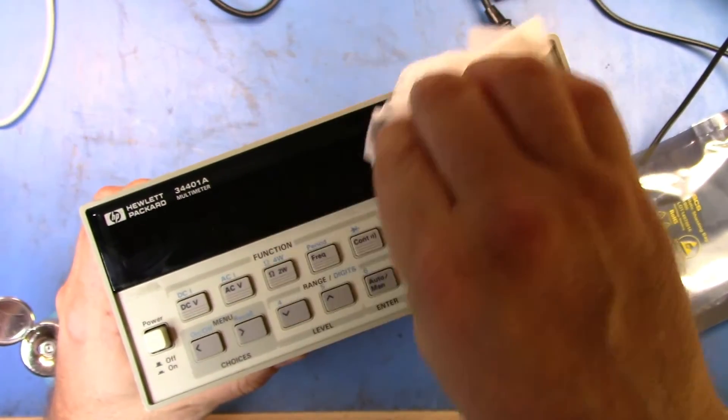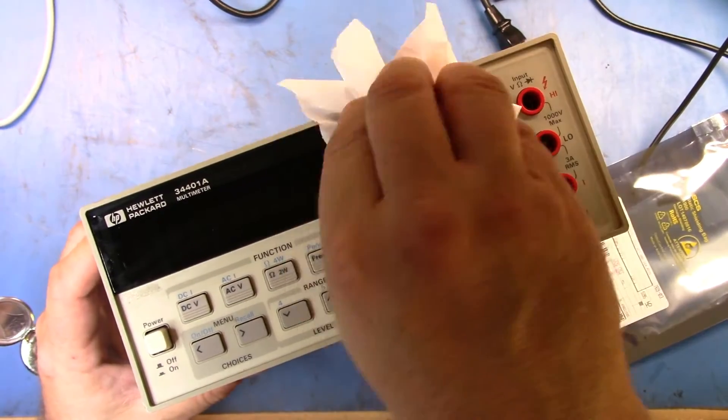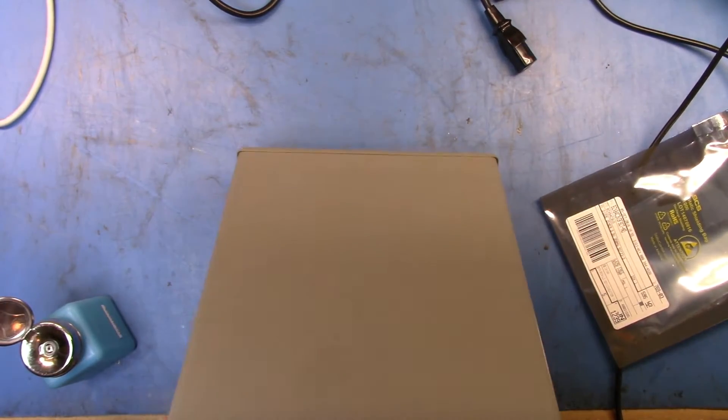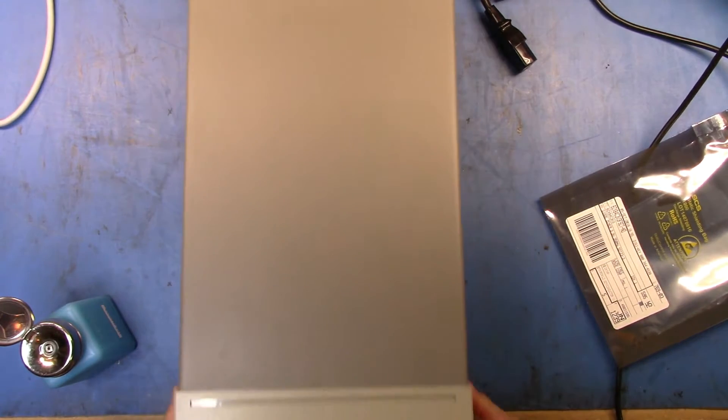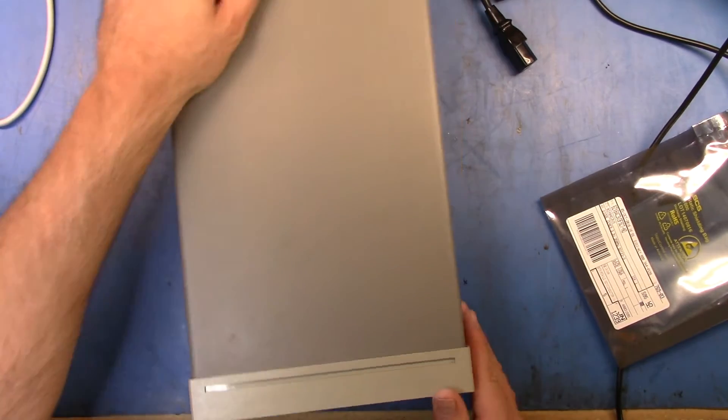But I've just received from DigiKey the replacement items and here we can see the replacement Zener diodes there. So let me just finish cleaning off this front panel, thrilling, cleaning off this tape residue, and now let's jump in and actually repair this.